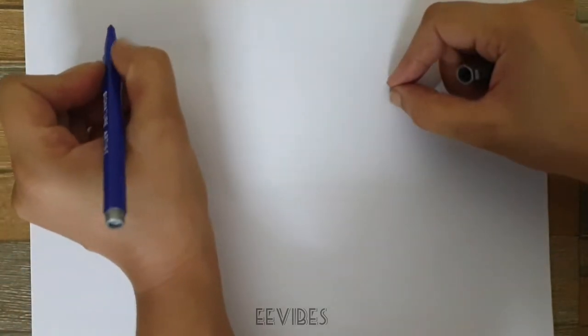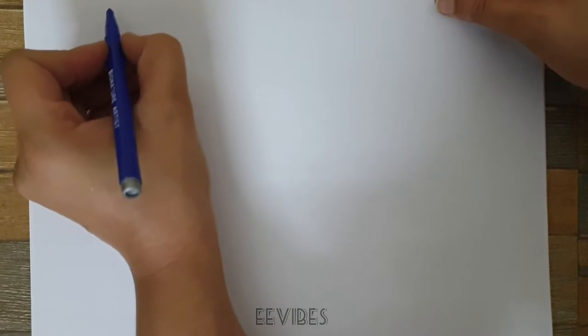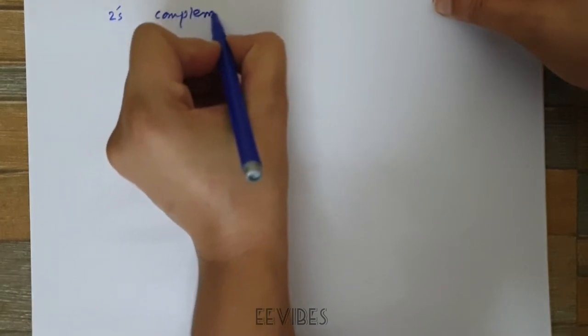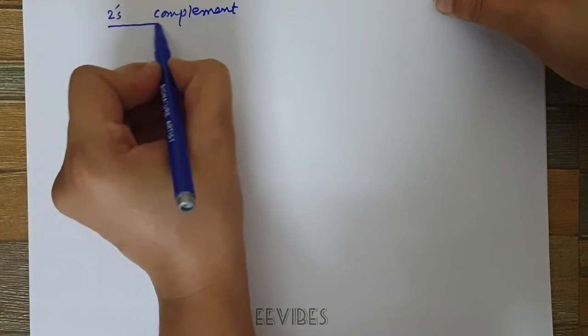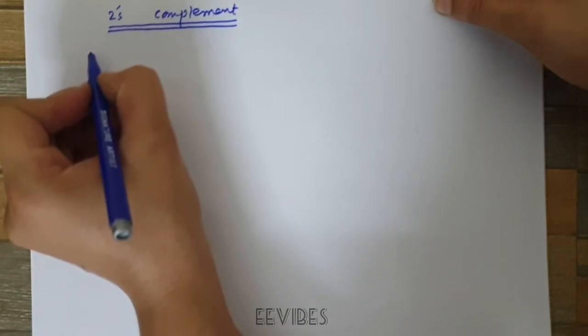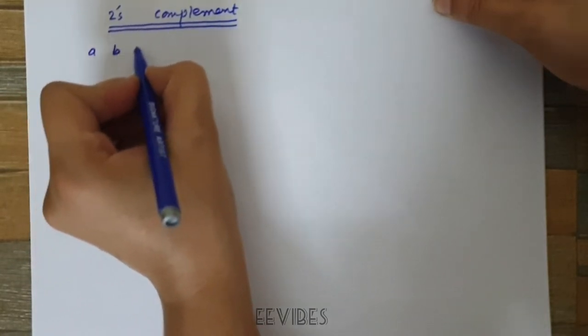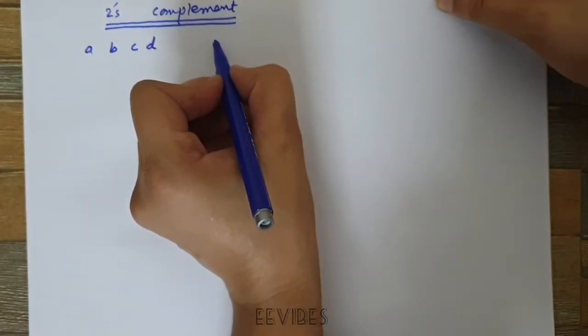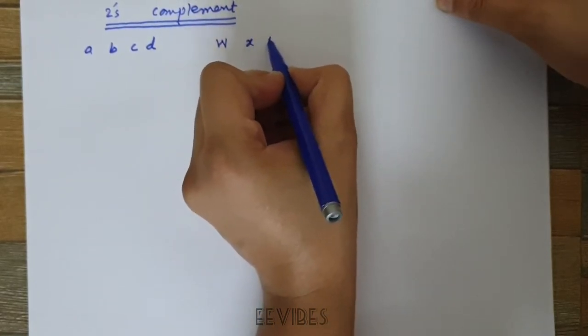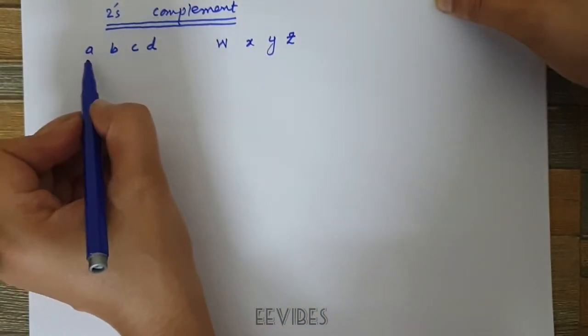The problem is to design a circuit that will take the two's complement of a four-bit binary number. As we know, the two's complement of a number represents the negative of that number. For the time being, let's say we have a four-bit input number A, B, C, D, and corresponding to that we will get an output number which will also have four bits: W, X, Y, and Z.